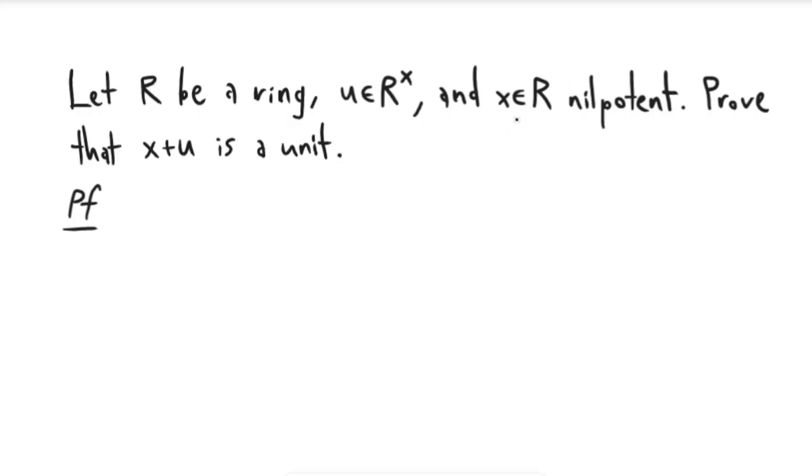To start we have this nilpotent element x, and we know that there exists some n greater than or equal to 1 such that x to the n is equal to 0.